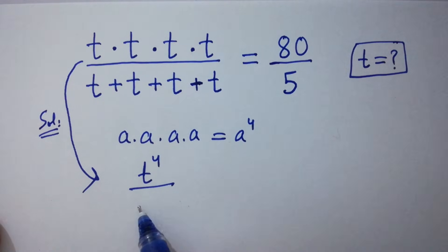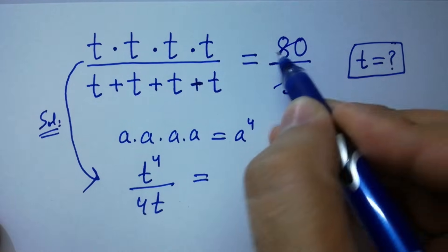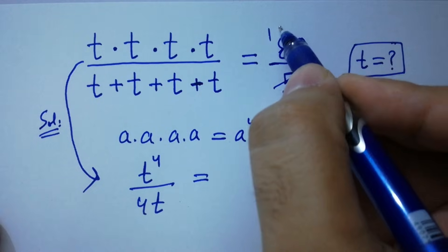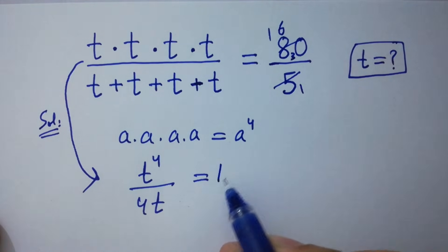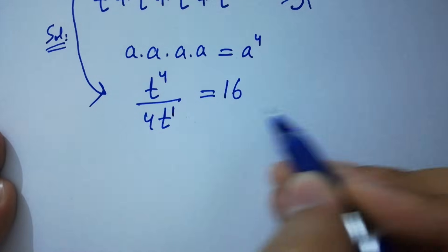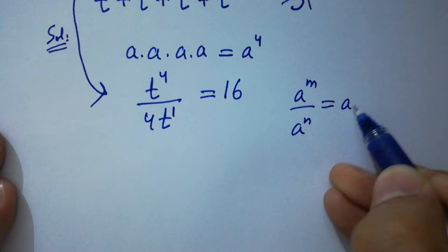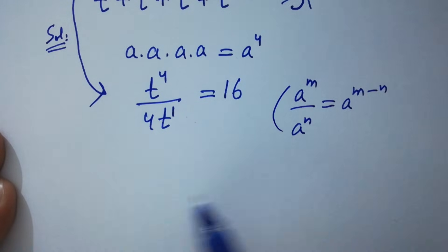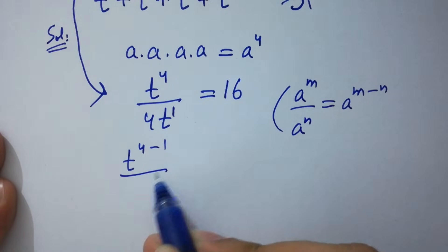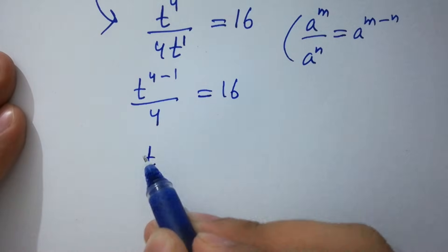t can be common, we have 4t here. On the right side, 80 over 5 equals 16. As we know, a to the power m over a to the power n equals a to the power m minus n.